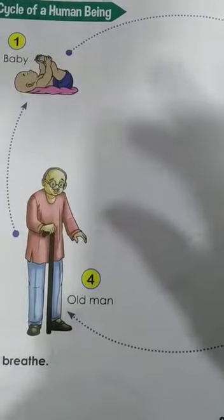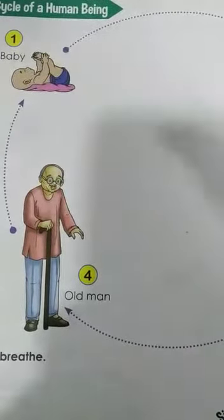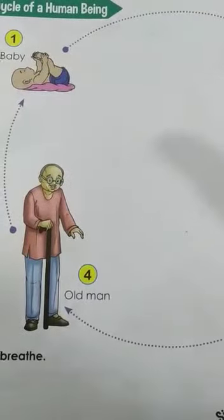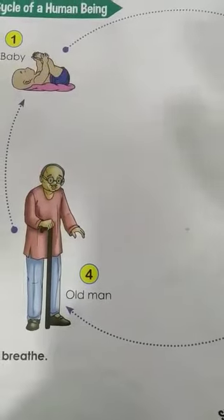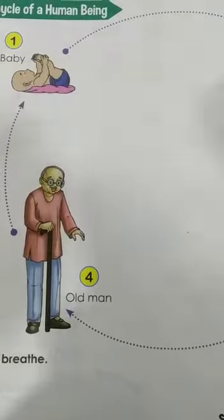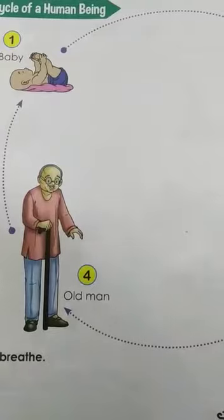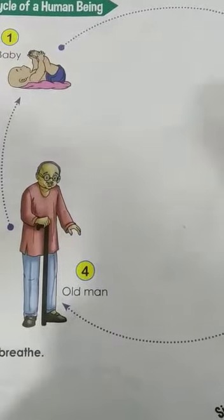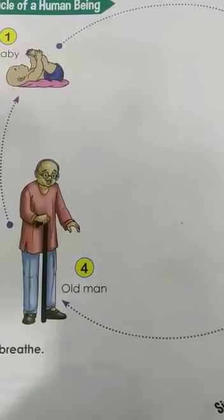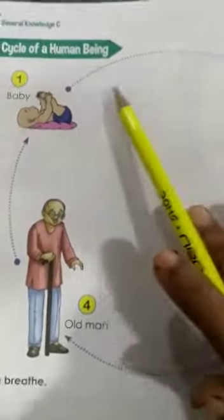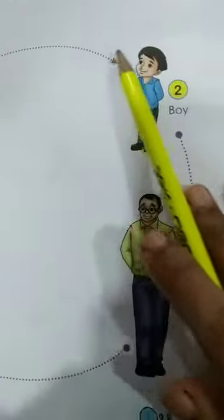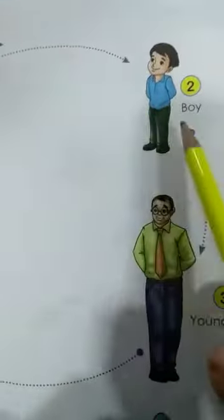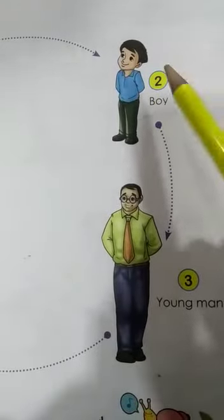Then you grow little by little into bigger babies. Then you start crawling, and slowly start walking. First you won't be able to talk; you won't have any teeth. Then slowly walking, then start speaking. Like that you grow bigger and bigger. So first you are babies, then from baby you grow into a boy or a girl. You become boy or girl, then you grow every day.